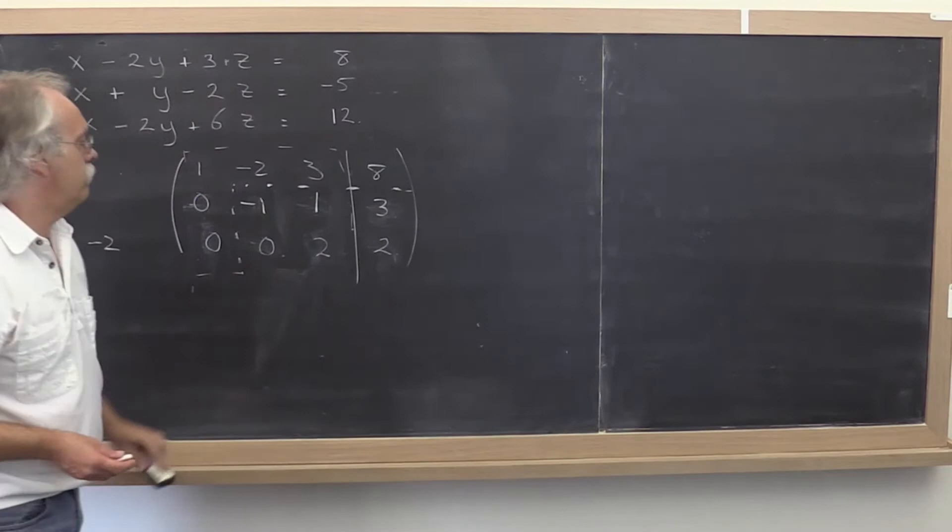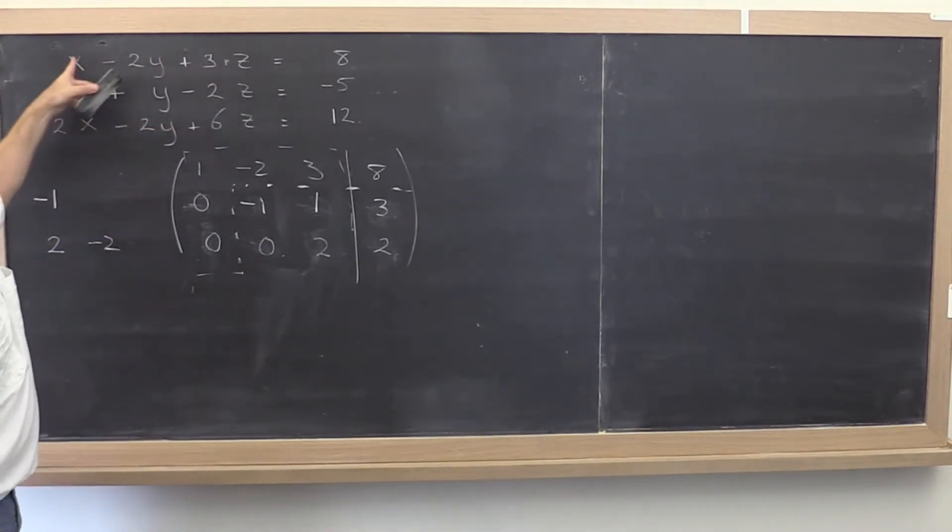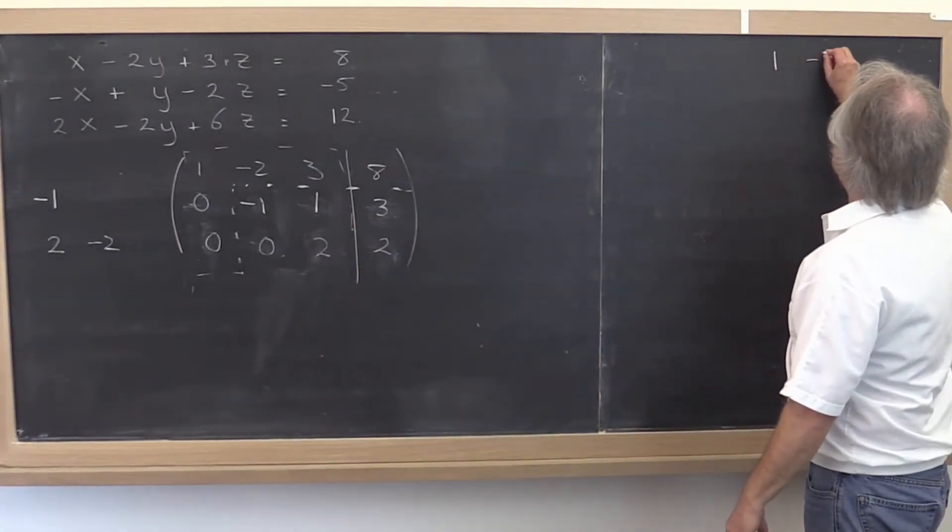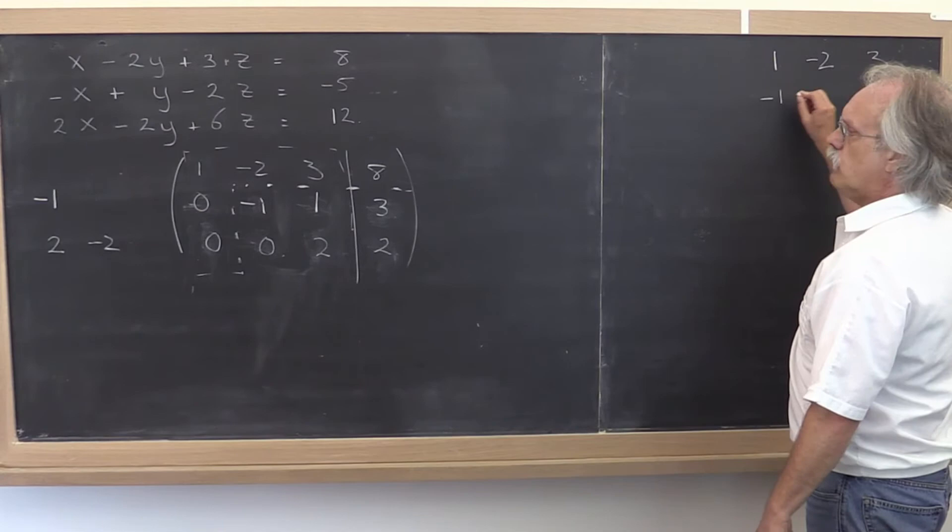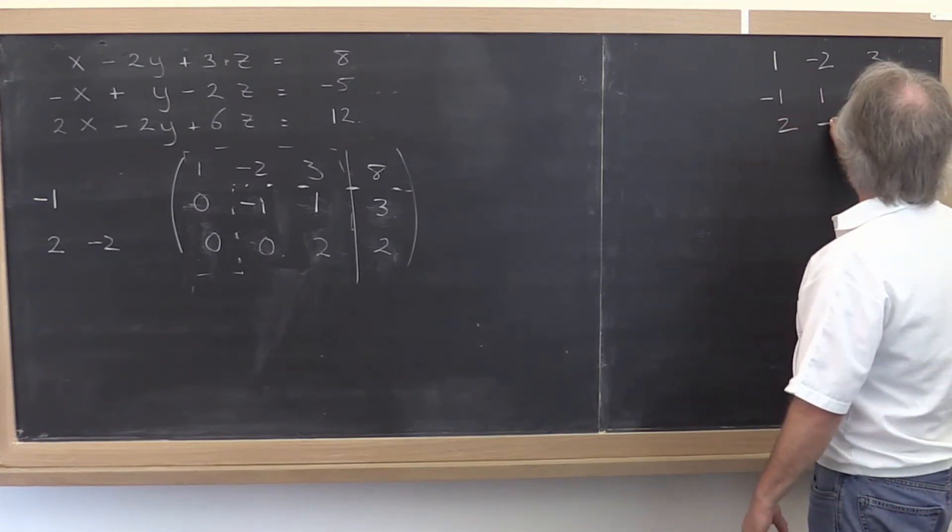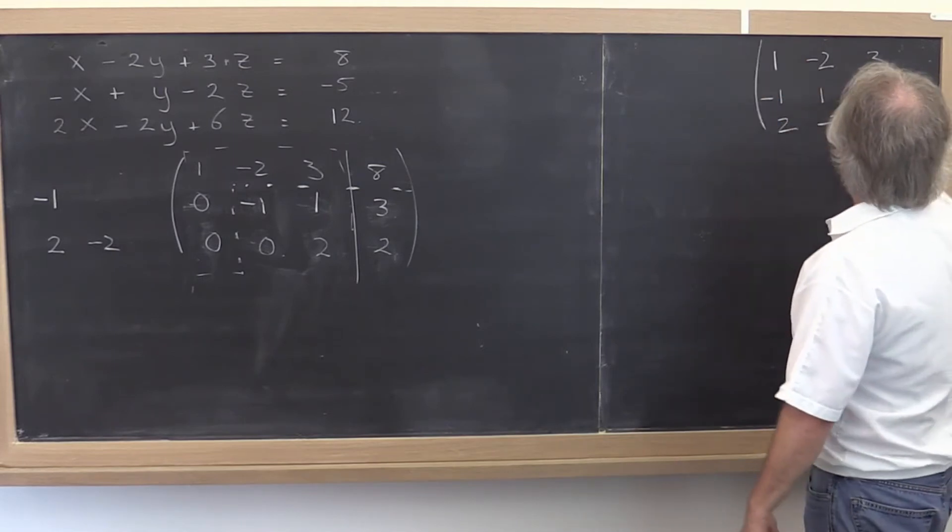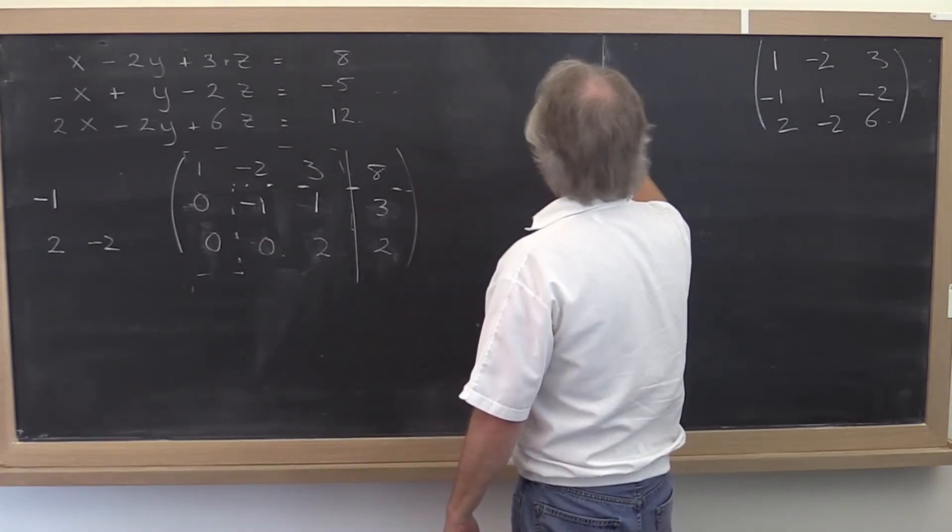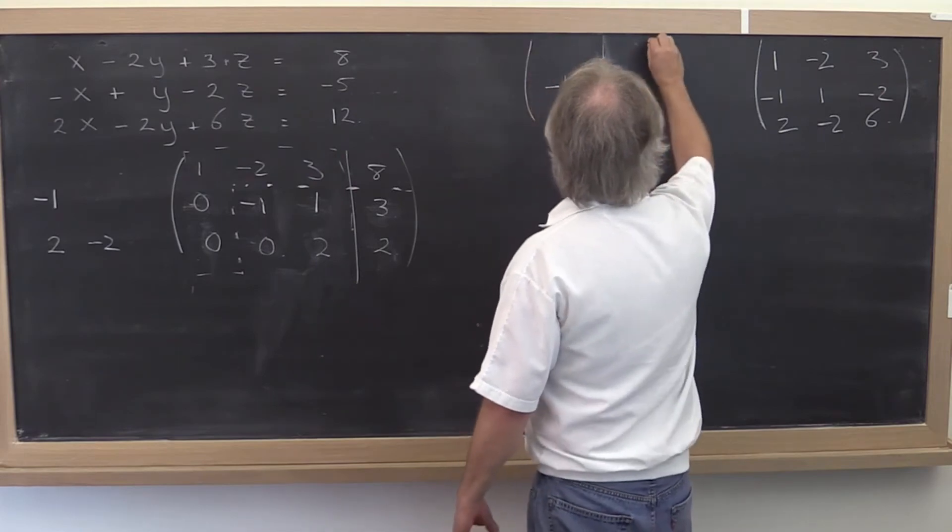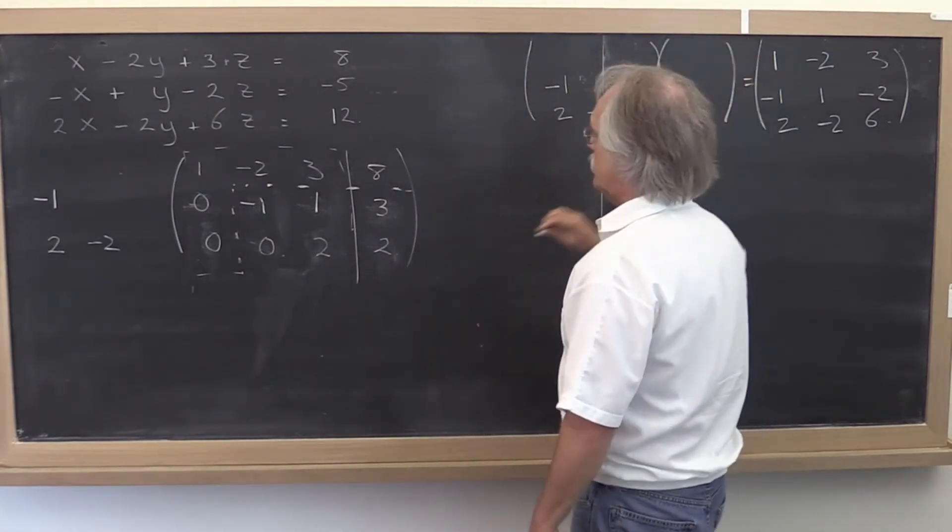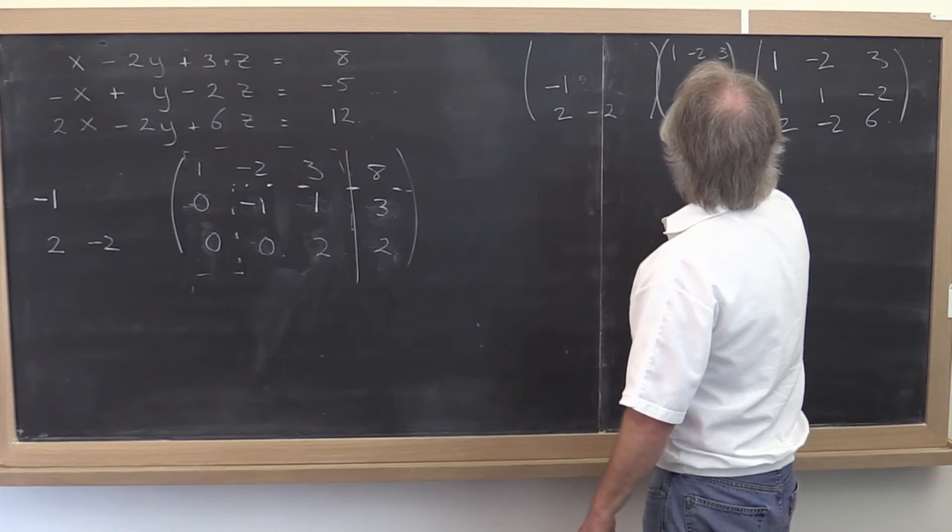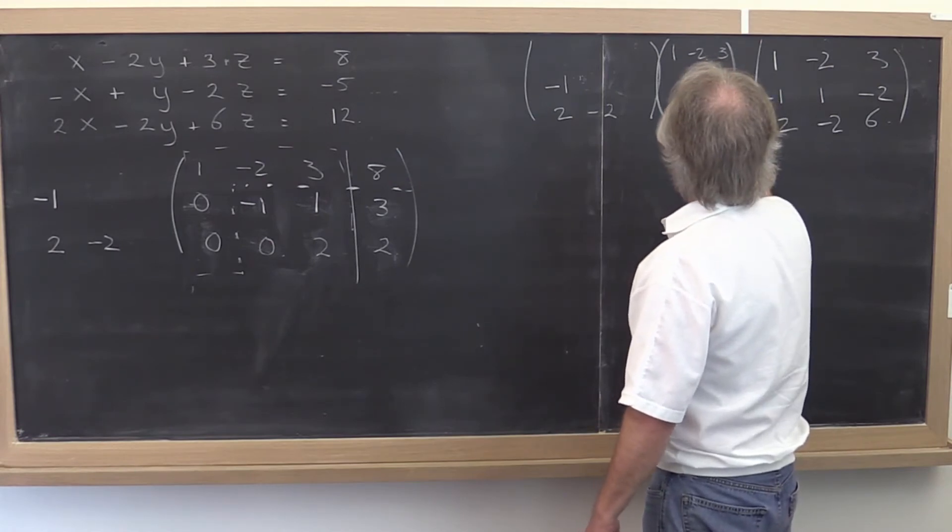So let's take that away. Now here is the magic. Let's go back up here and let's think back of the matrix that we have there. And let's write it over here. 1 minus 2, 3 minus 1, 1 minus 2, 2 minus 2, 6. And let's take this and let's write it over here. Minus 1, 2 minus 2. And let's take this upper triangular matrix and let's write it here. 1 minus 2, 3 minus 1, 1, 2 with 0s below the diagonal.